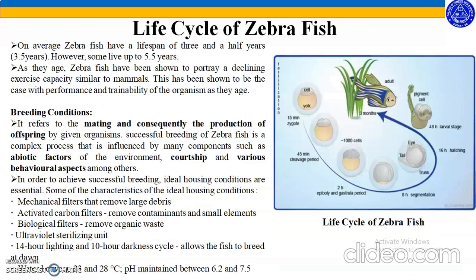Coming over to the life cycle of zebrafish, on average, zebrafish have a lifespan of 3 and a half years; however, some live up to 5.5 years. As they age, zebrafish have been shown to portray a declining exercise capacity similar to mammals, which has been shown to be the case with performance and trainability of the organism as they age.